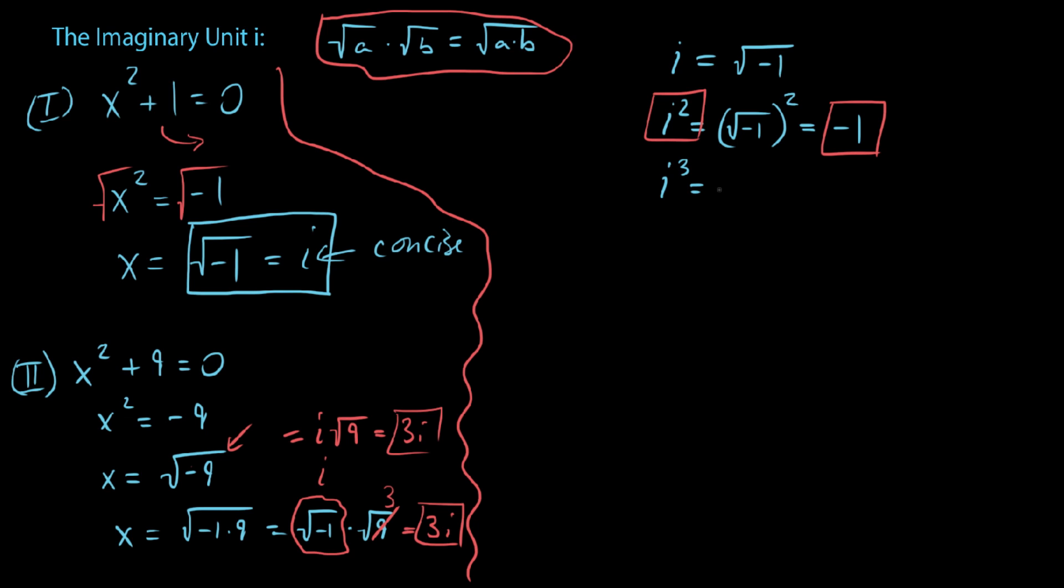How about i cubed? Because of our rules of exponents, we can express this as i squared times i. And my intent for doing so is basically to draw upon what we just said. We know that i squared is negative 1. So whenever we see an i cubed, we can basically keep in mind that that's the same thing as negative 1 times this i right here. In other words, whenever we see an i cubed, it is the same thing as negative i.